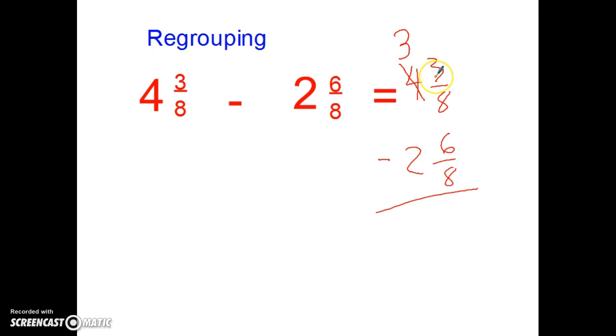What the person borrowed is a whole one. But I need it to be in eighths. Because that's what my denominator is. So 1 whole is also 8 eighths. That's how much I borrowed. I already had 3 eighths. So 8 eighths plus 3 eighths is 11 eighths.